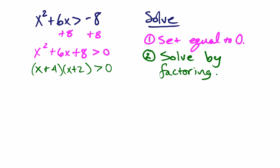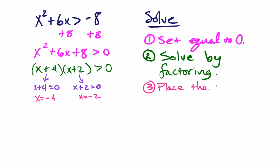Now when you set each parenthesis equal to 0 — x plus 4 equals 0 and x plus 2 equals 0 — these are not going to be your answers. Because an inequality doesn't just have one answer; an inequality has an answer that is a group of numbers or a set. So x equals negative 4 and x equals negative 2 are the places where the inequality equals 0, but we're looking for where it's greater than 0. We're going to place what I call the critical values on a number line and test some intervals.